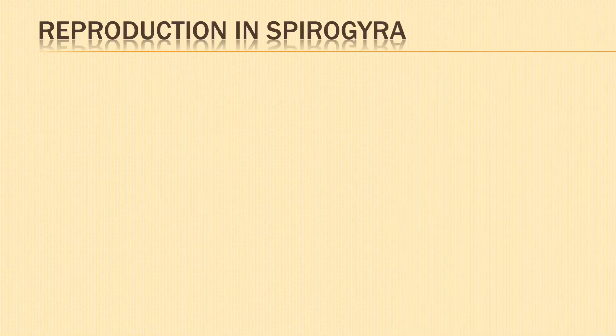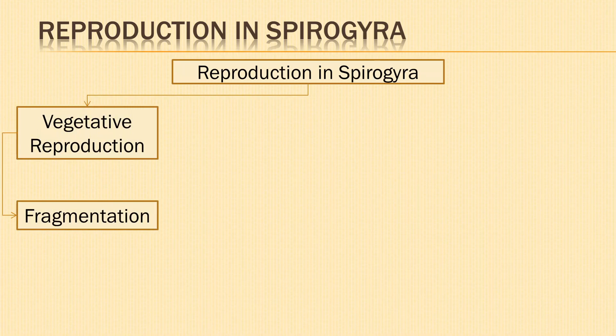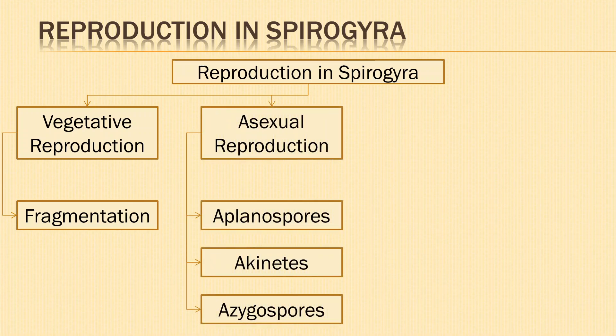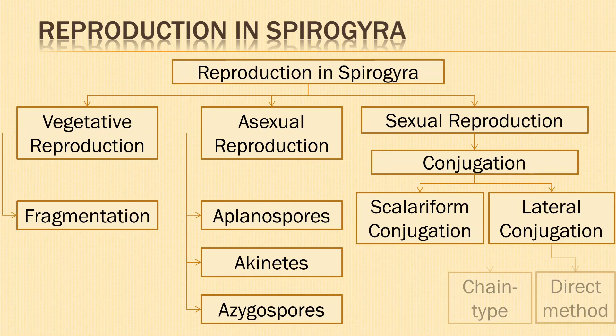Next, we come to reproduction in Spirogyra. The different types of reproduction in Spirogyra are: vegetative reproduction by fragmentation; asexual reproduction by aplanospores, akinites, and azygospores; and sexual reproduction by conjugation, which is of two types — scalariform conjugation and lateral conjugation. Lateral conjugation may be chain type or by direct method.